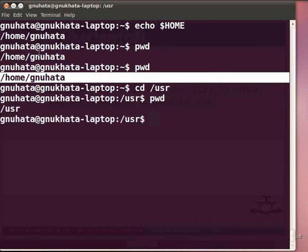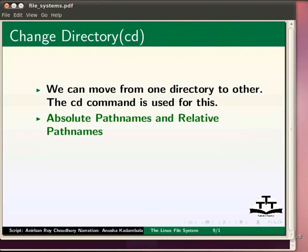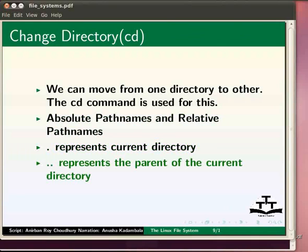We have moved to the /usr directory. The problem is that path names can be very long because these are absolute path names that list the entire path starting from the root directory. Instead we may use relative path names that begin from the current directory. Here we need to know two special characters: dot (.) that represents the current directory, and dot-dot (..) that represents the parent directory.